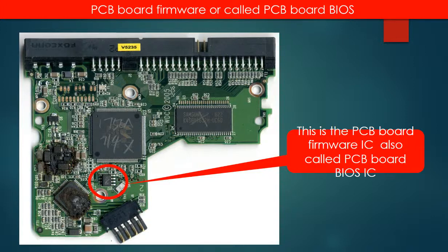This picture shows a very important chip on the PCB board. We call this the PCB board firmware IC. Some people call this chip the PCB board BIOS IC. This is a memory chip — it holds all the information on the PCB board. For the rest of this video, we are going to talk about how to transfer this chip's information from the bad PCB board to a good PCB board. We do the BIOS transfer first, then we do the PCB board swap.